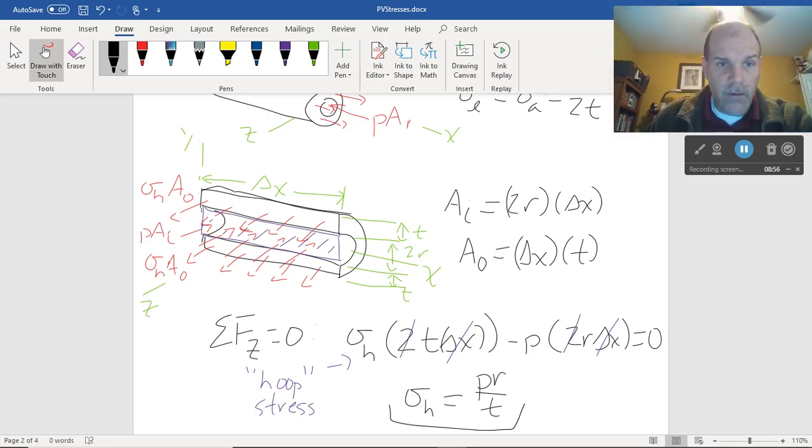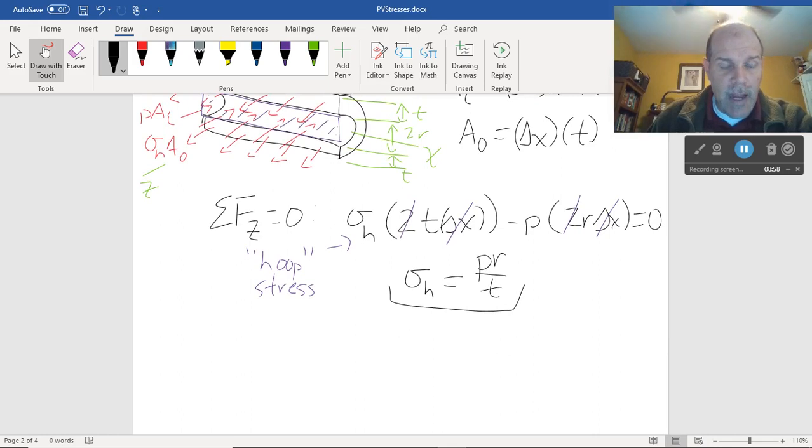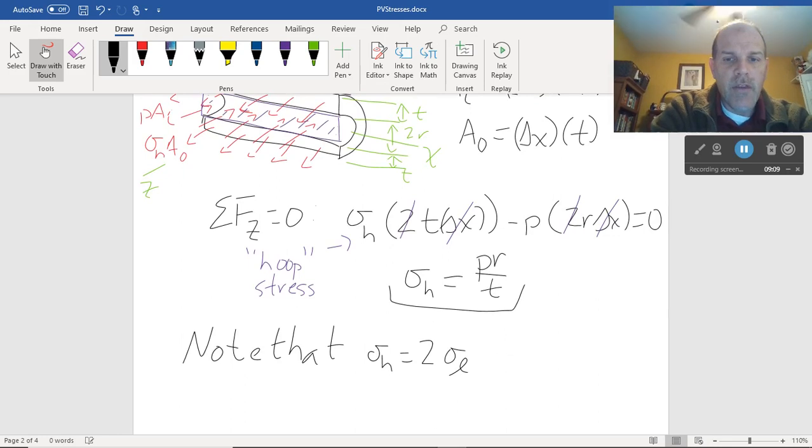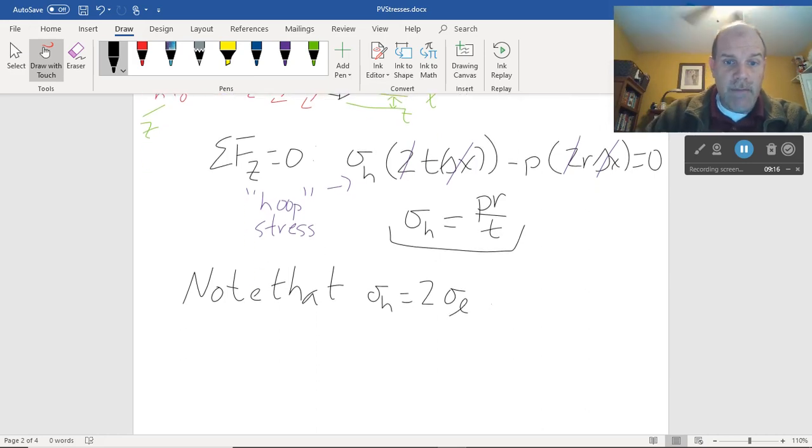Notice also, this is not a coincidence, this is the way it happens, right? Note that sigma h is equal to 2 sigma l. The hoop stress is twice that longitudinal or axial stress. Okay, I want you to notice one more thing.